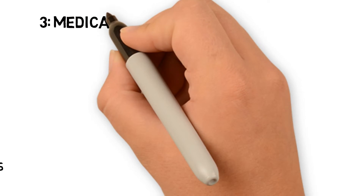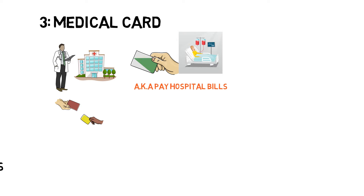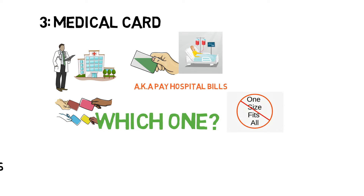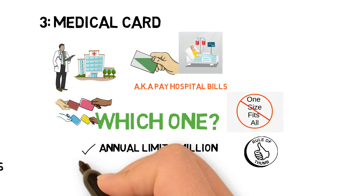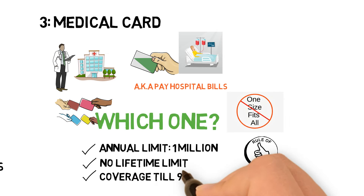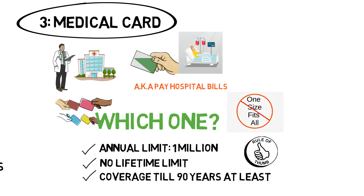Number three: medical card. This is essentially to cover your hospital bills whenever you get admitted, for example. But in the current competitive market, there are so many medical cards launched by various insurance companies, leaving consumers asking one question: which one? The answer is there's no one-size-fits-all. It all depends on the individual. But here's a rule of thumb — it is advisable to get a medical card with a minimum of 1 million annual limit, no lifetime limit, and make sure it covers you at least till 90 years old.